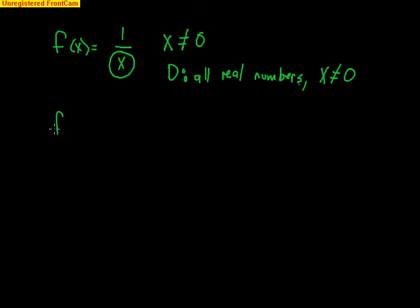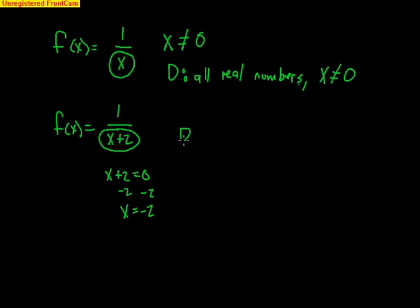For this particular problem, the domain would be all real numbers with the exception of x cannot equal 0. Let's do another easy one, f(x) = 1/(x + 2). This bottom part cannot be 0. So what number makes the bottom 0? Set it equal to 0, subtract 2, x = -2. If I use negative 2 plus 2, I get 0. So my domain would be all real numbers, with the exception of x cannot equal -2, because -2 would make the denominator 0.